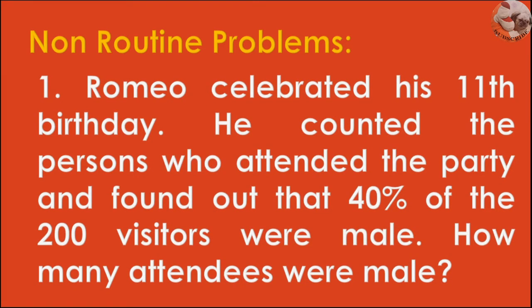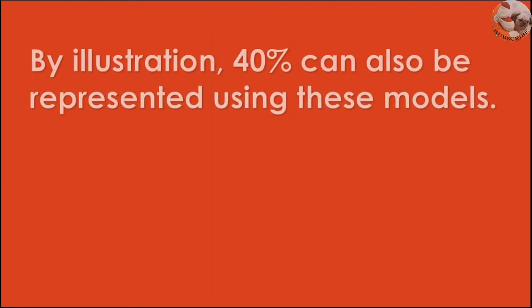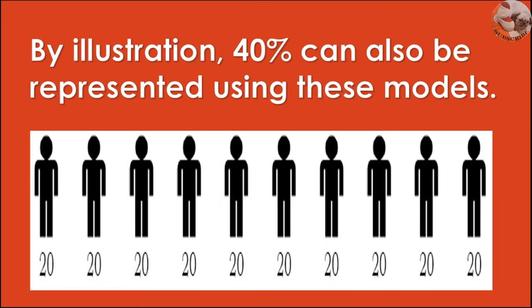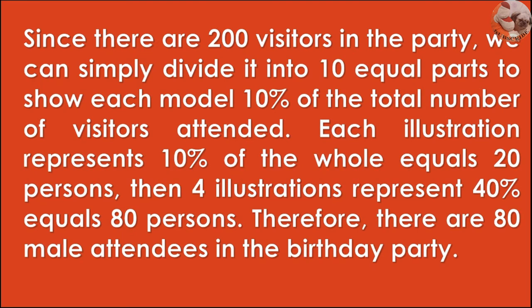Then we have non-routine problems. Example problem number one: Romeo celebrated his 11th birthday. He counted the persons who attended the party and found out that 40% of the 200 visitors were male. How many attendees were male? By illustration, 40% can be represented using models. Since there are 200 visitors, divide into 10 equal parts — each part represents 10%, equal to 20 persons. Four parts represent 40%, equal to 80 persons. Therefore, there are 80 male attendees in the birthday party.